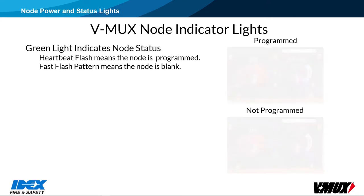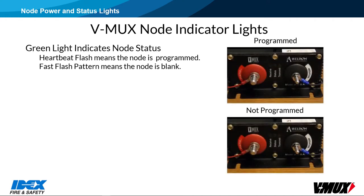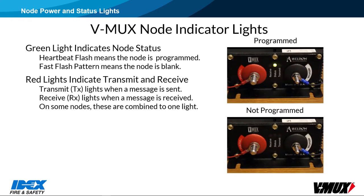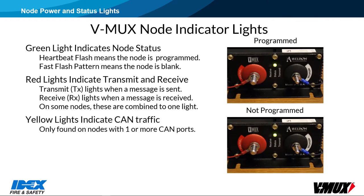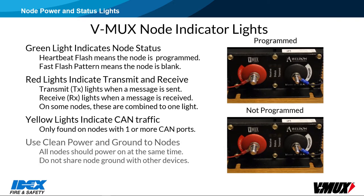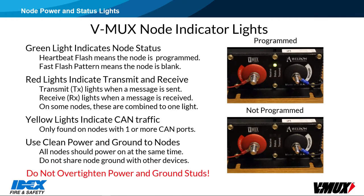The green status LED has a steady heartbeat flash when programmed, and a fast flash pattern when not programmed. The red transmit LED lights when a message is sent, and the receive LED lights when a message is received. The VDR and high content nodes have yellow indicators to indicate CAN port activity. Use clean power and ground connections to the nodes. All nodes need to power up at the same time. Do not share the node ground wire with other devices — the node should have its own ground wire, and a separate ground wire should be run to all other devices. Do not over-tighten power and ground studs; they are molded plastic studs and can break with too much pressure. You can add a second nut and tighten the nuts against each other to make tighter connections if needed.